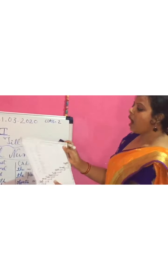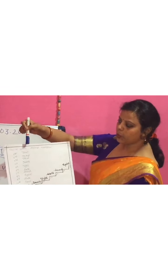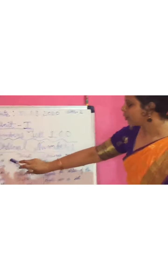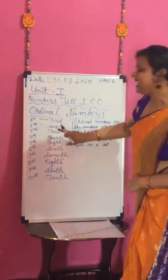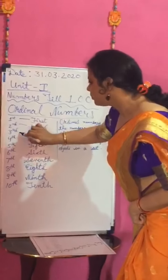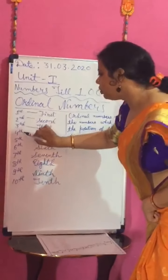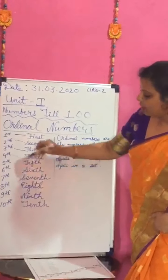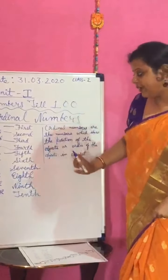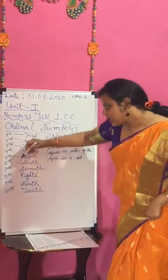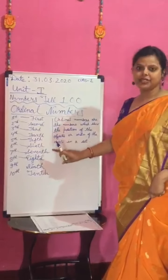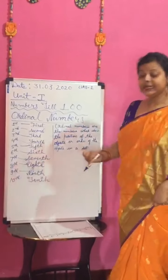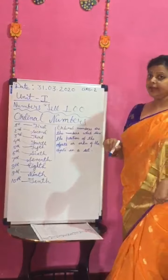Now, our next topic is how to write ordinal numbers. See, all of you: 1st — F-I-R-S-T; 2nd — S-E-C-O-N-D; 3rd — T-H-I-R-D; 4th — F-O-U-R-T-H; 5th; 6th — S-I-X-T-H; 7th — S-E-V-E-N-T-H; 8th — E-I-G-H-T-H; 9th — N-I-N-T-H; and the last one is 10th — T-E-N-T-H.